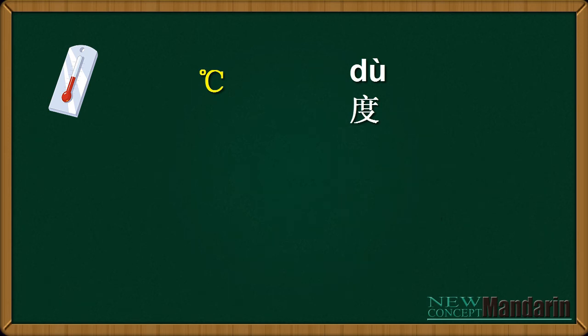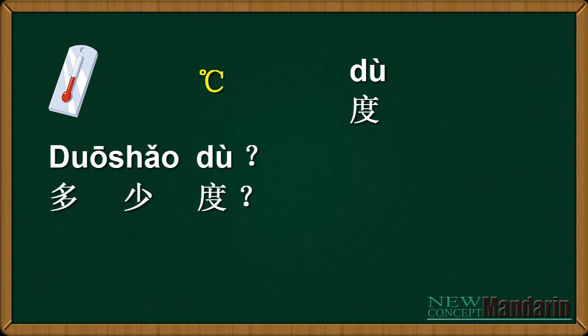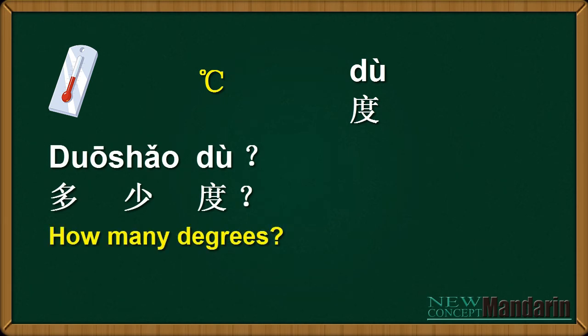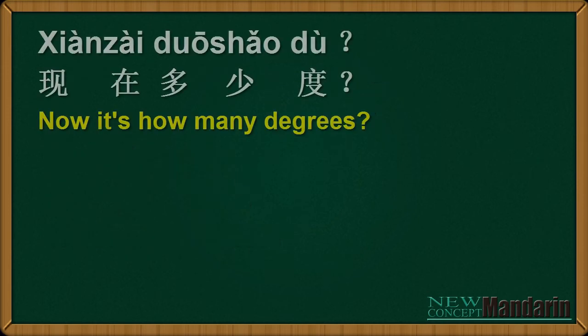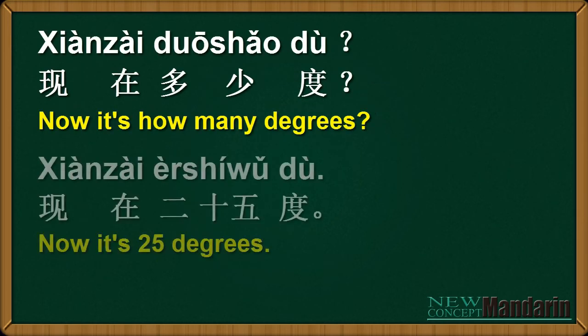Here comes the question — what's the temperature? 多少度? We say how many degrees: 多少度? 现在多少度? 现在二十五度?